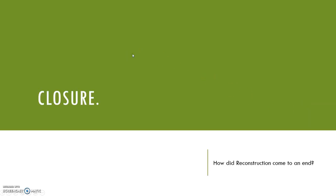Our closure: How did Reconstruction come to an end? Think about the problems President Grant faced that led to issues with Reconstruction, and think about the election of 1876 with Rutherford B. Hayes and Samuel Tilden and the controversy around it. Hope you have a great rest of your day or night, and I hope to talk to you all soon. Take care, everyone.